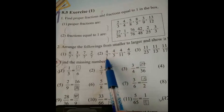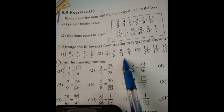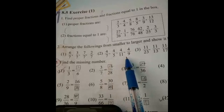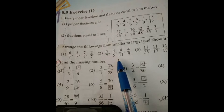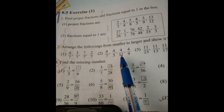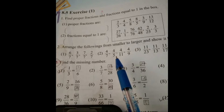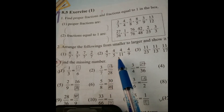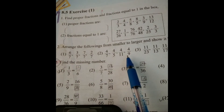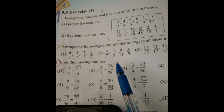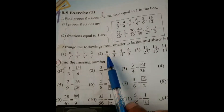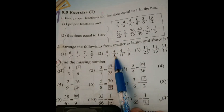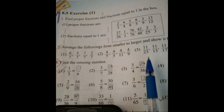Here, all the denominators are not the same, but the numerators are the same. When numerators are the same, the fraction with the smallest denominator is the greatest. So arranged from smallest to greatest: 4 by 11 is the smallest, then 4 by 9, then 4 by 7, then 4 by 5. We have arranged from smaller to greater.